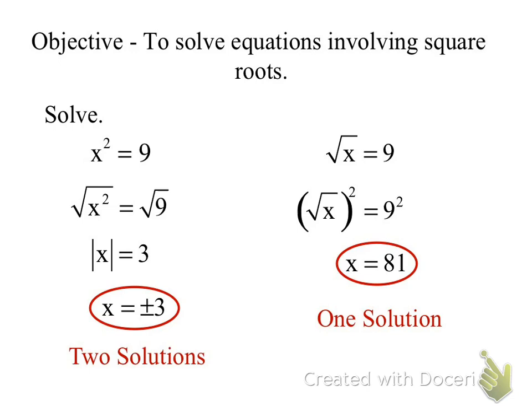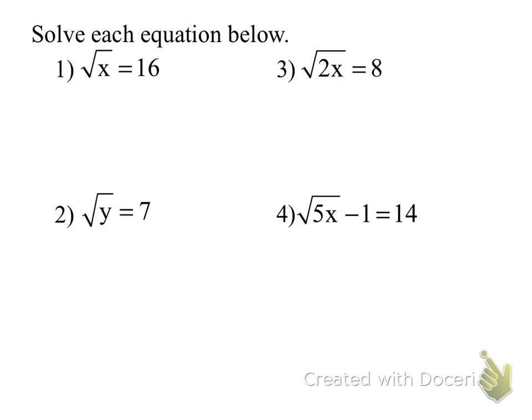Let's practice. I have the square root of x equals 16. The inverse operation is finding the square, so we square everything. Radical x squared gives us x, and 16 squared equals 256. That's our answer.